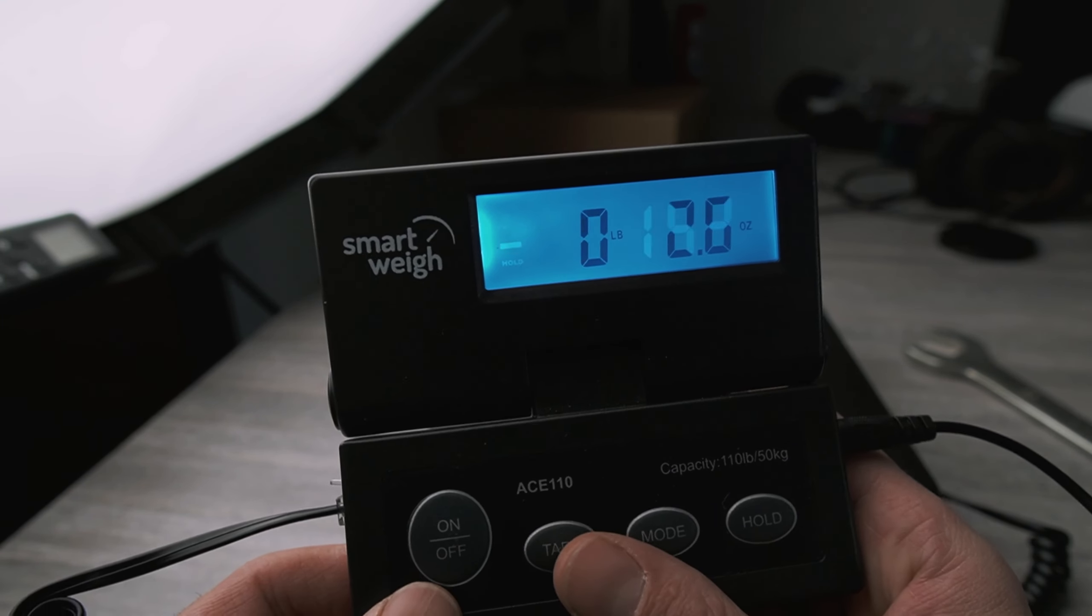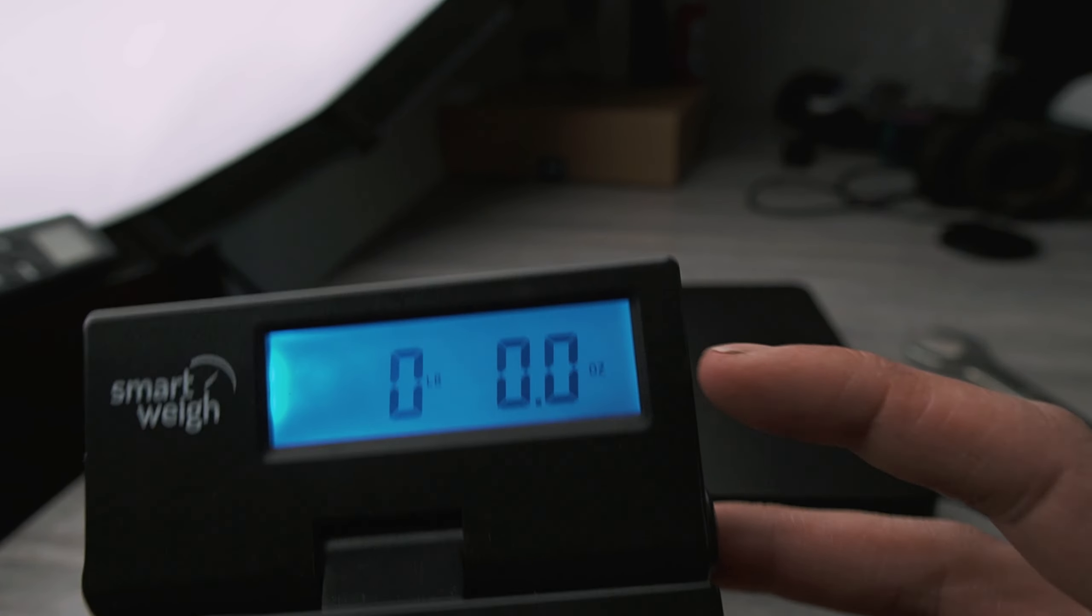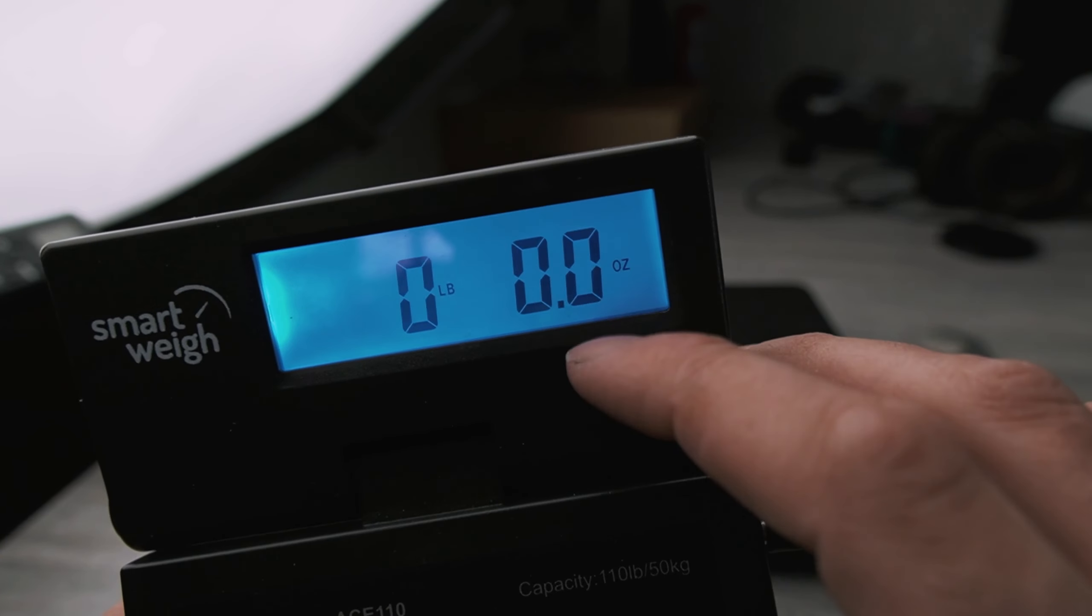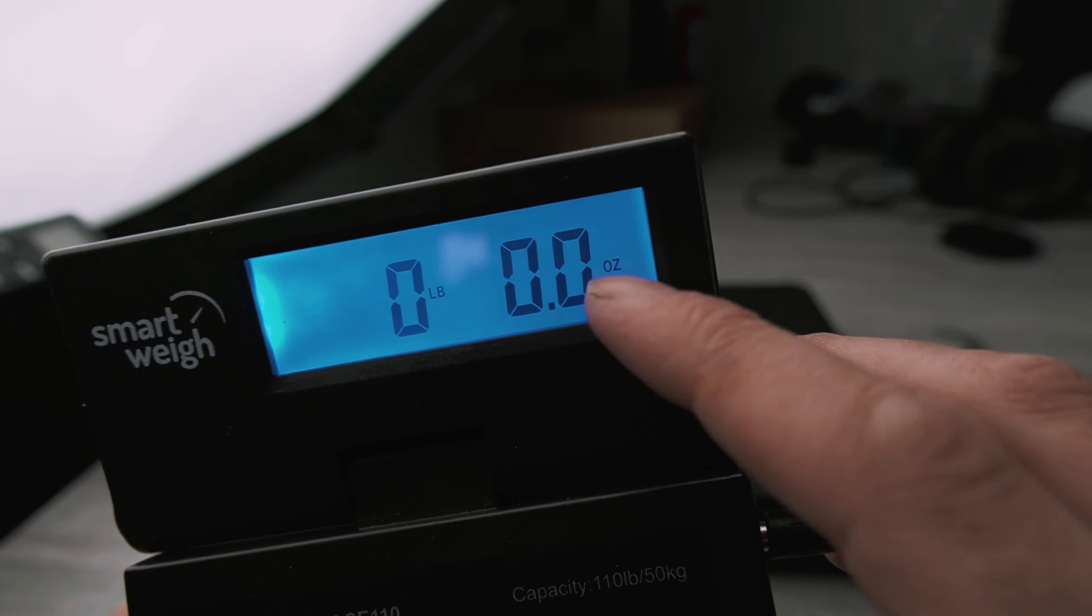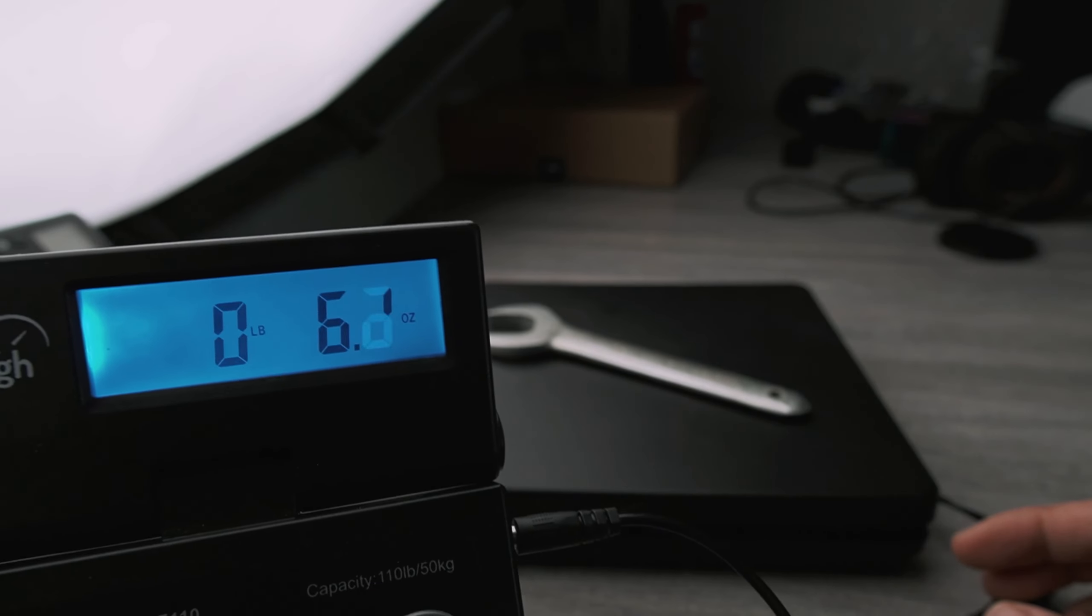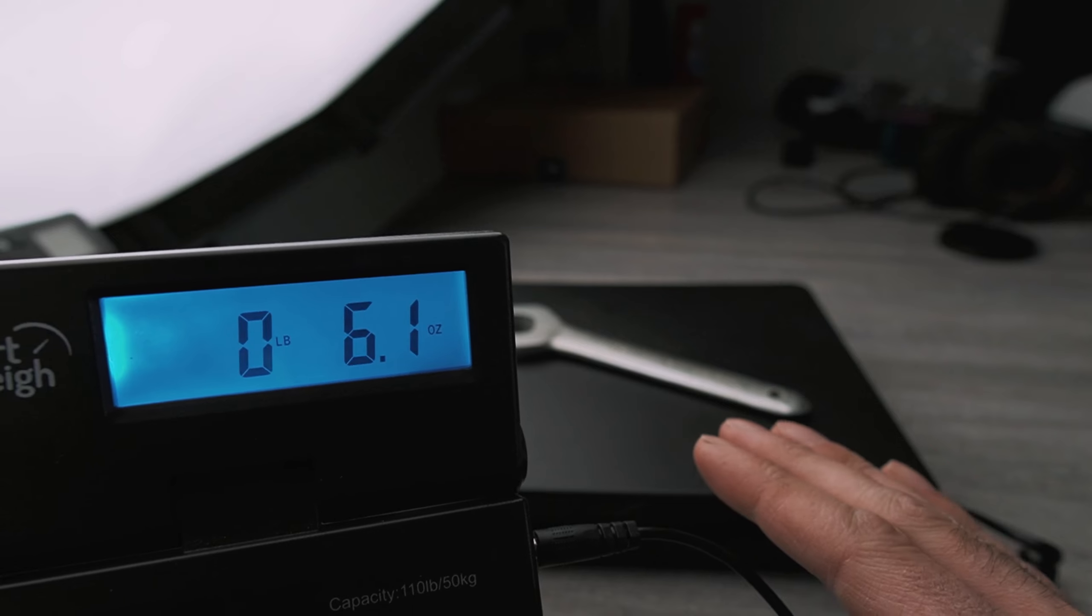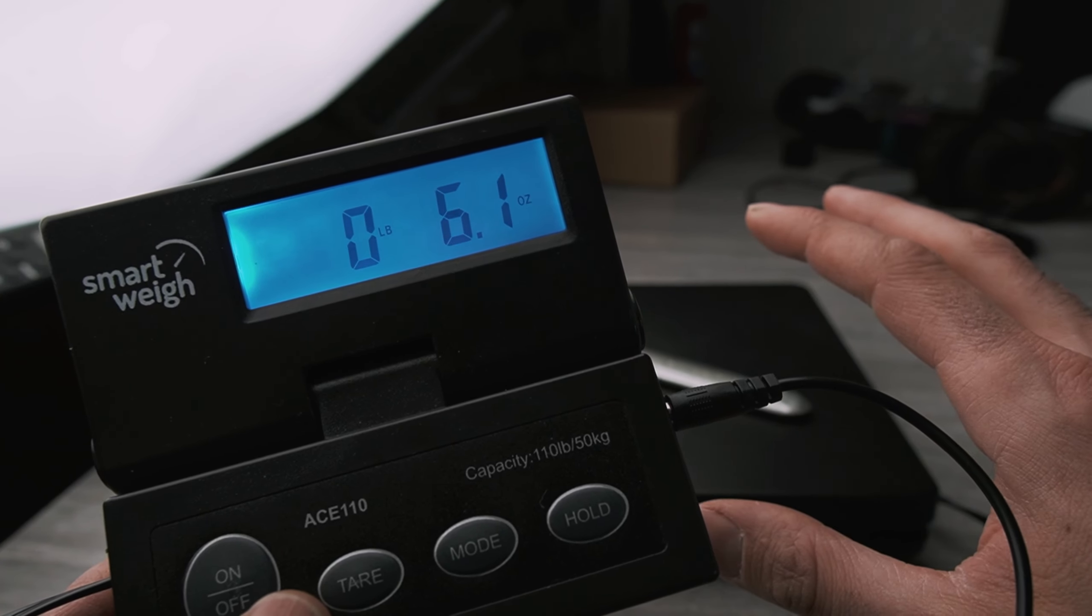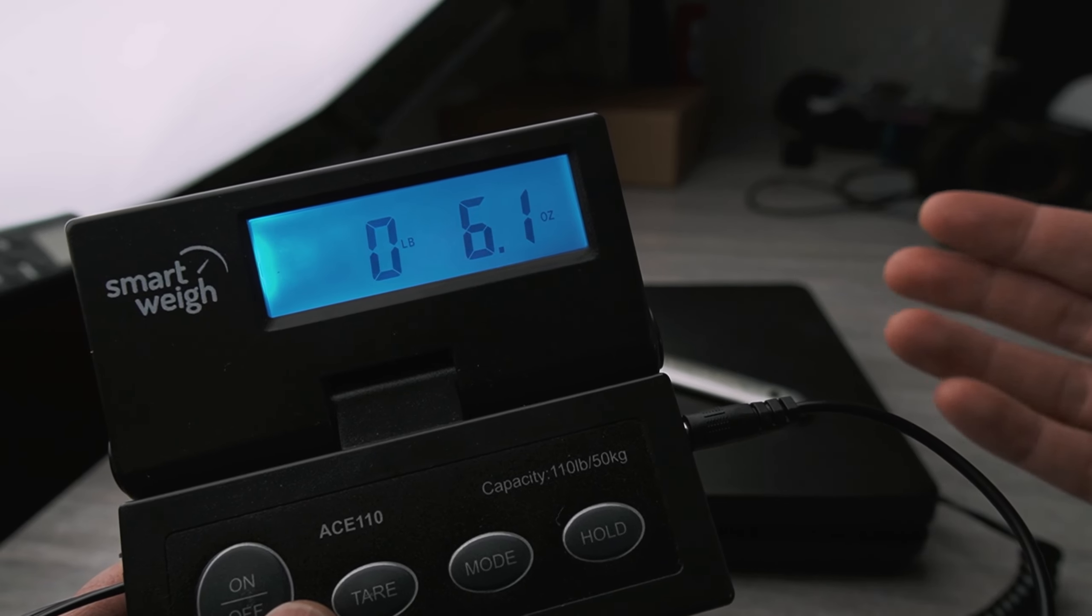If you're worried about the precision of the one decimal point of the ounces, like that sort of sensitivity with the scale, I would look for a smaller scale that has maybe a five-pound range that will be more sensitive to those small little increments.